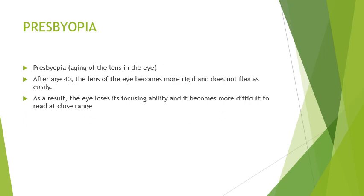Presbyopia is aging of the lens in the eye. After 40 years of age, the lens of the eye becomes more rigid and does not flex easily. As a result, the eye loses its focusing ability and it becomes more difficult to read at close range.